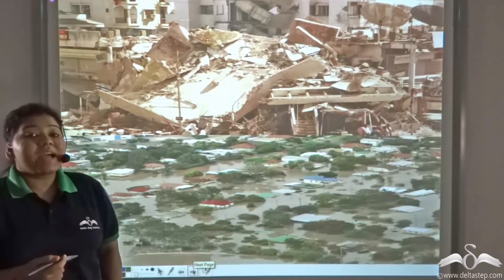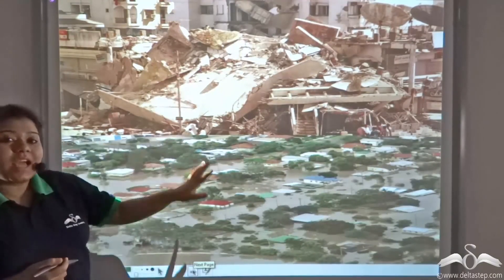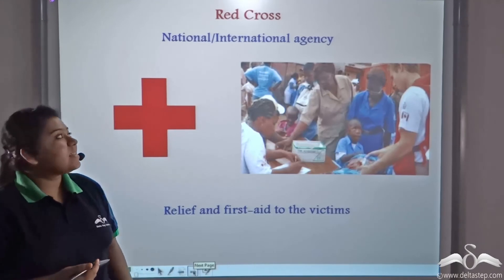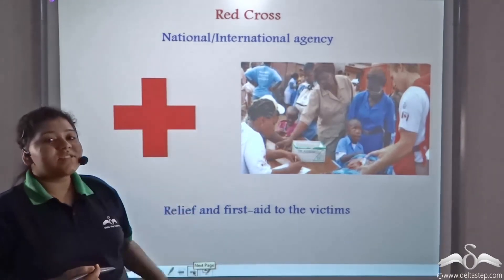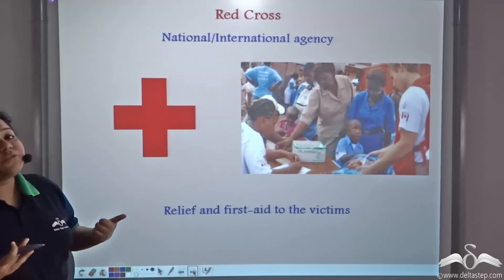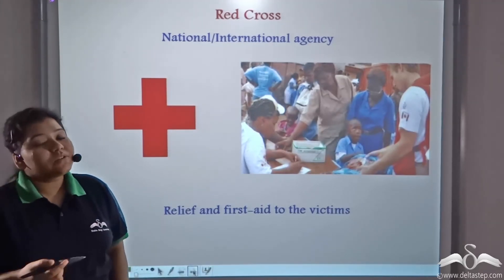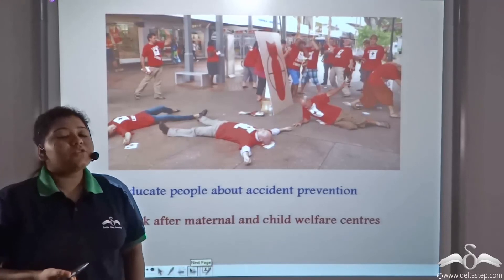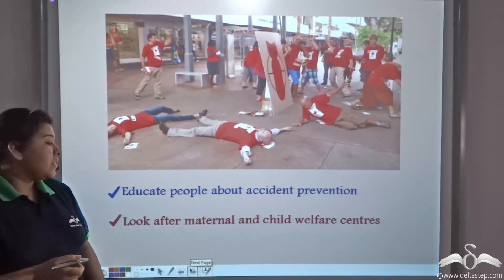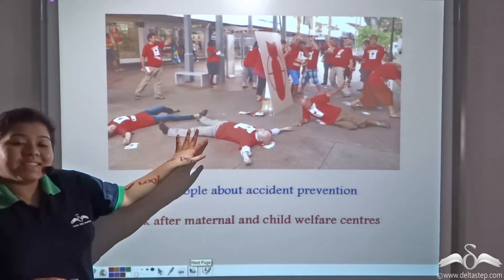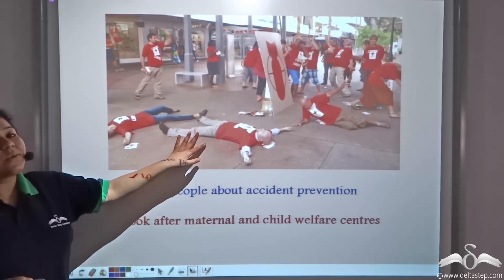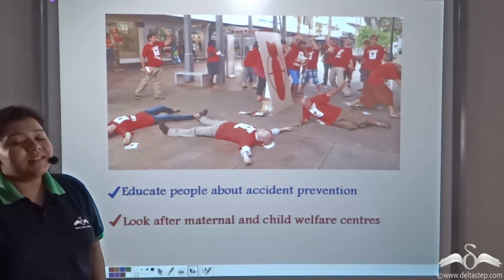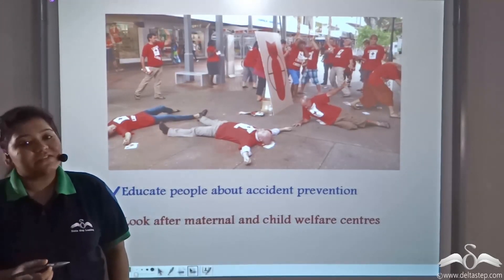During times of natural calamities such as earthquakes and floods, where many people suffer, there is a national and international agency known as the Red Cross which provides relief and first aid to the victims. Not only do they provide relief and first aid, they also educate people about accident prevention. They also look after maternal and child welfare centres across different countries.